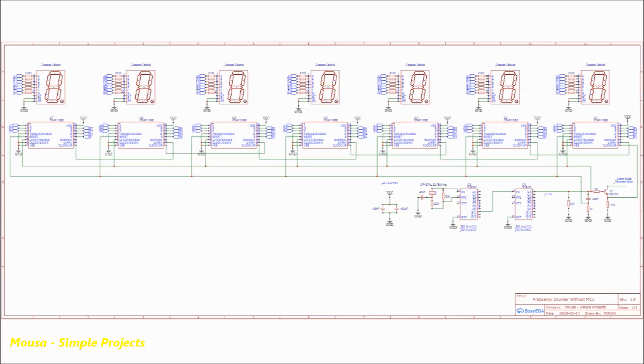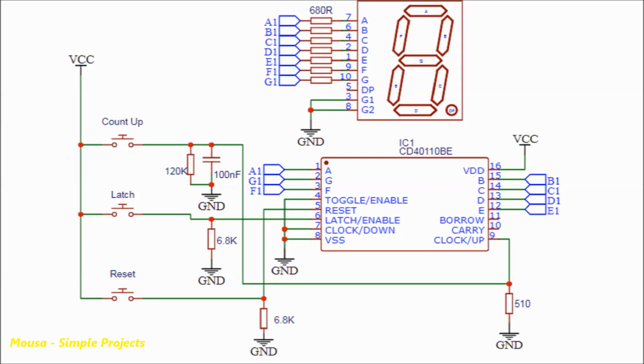To make it easier to understand how this circuit works, let's take a single IC with its seven segment display. There are three functions in this IC we have to use: count up, latch, and reset.